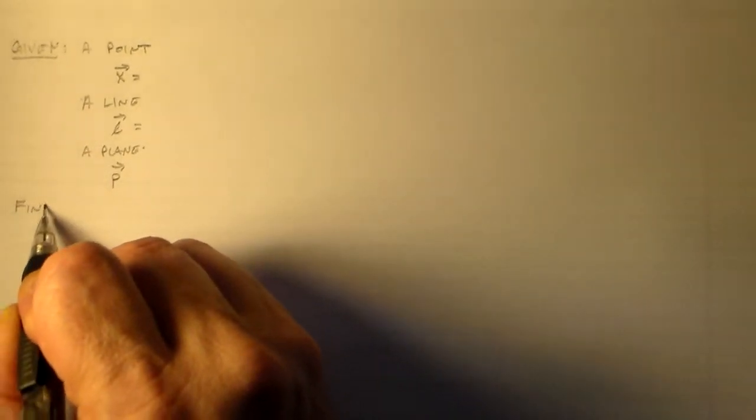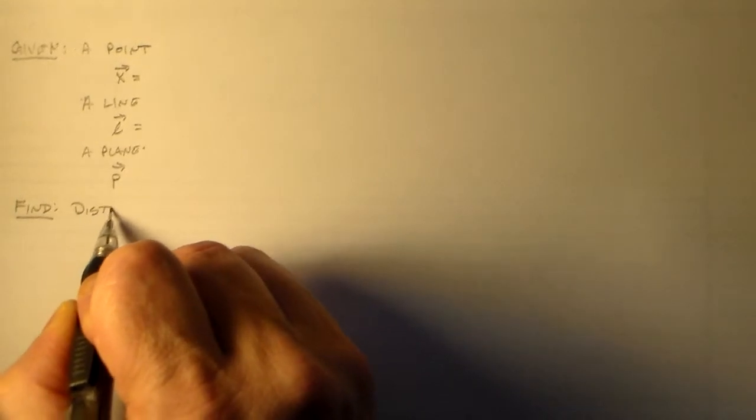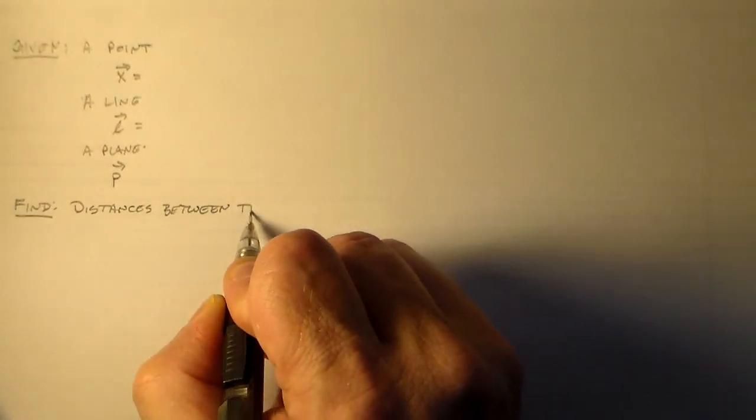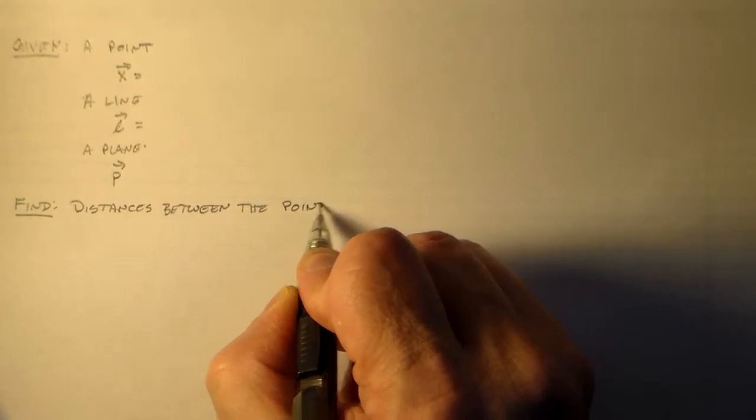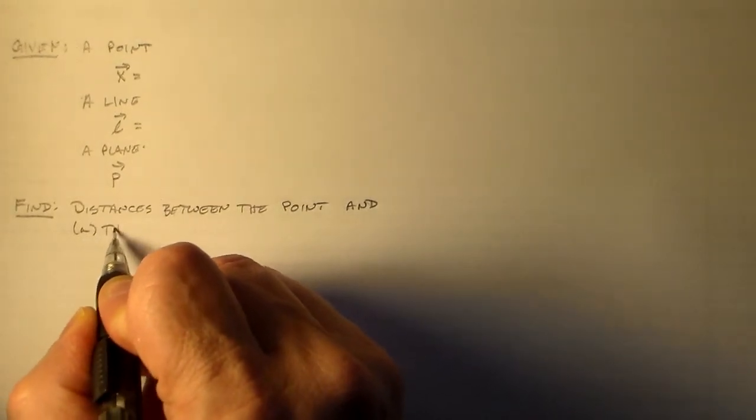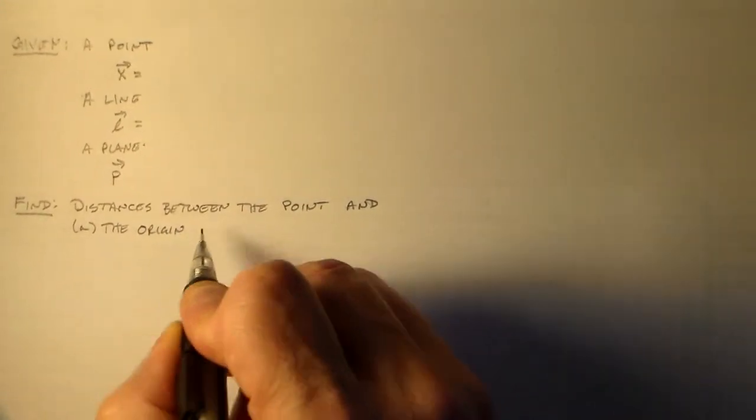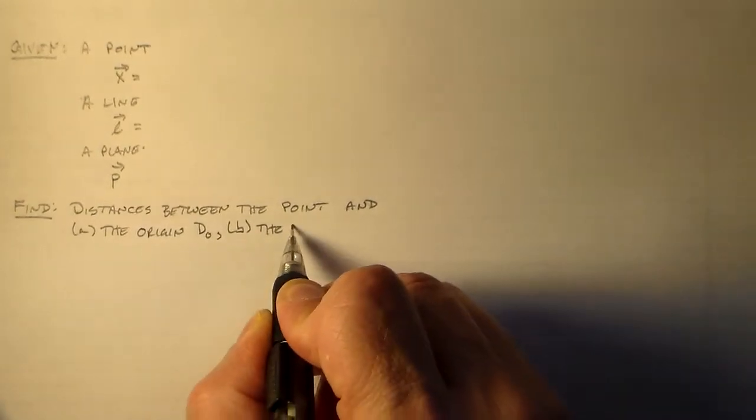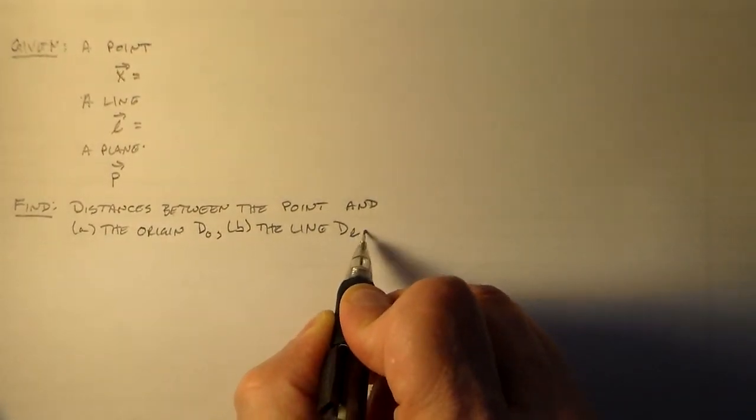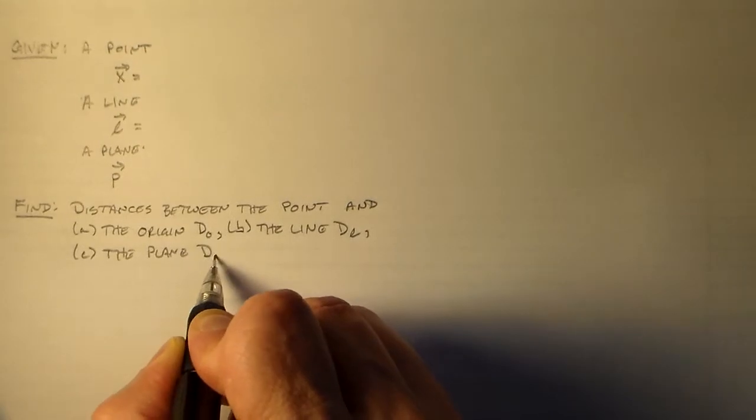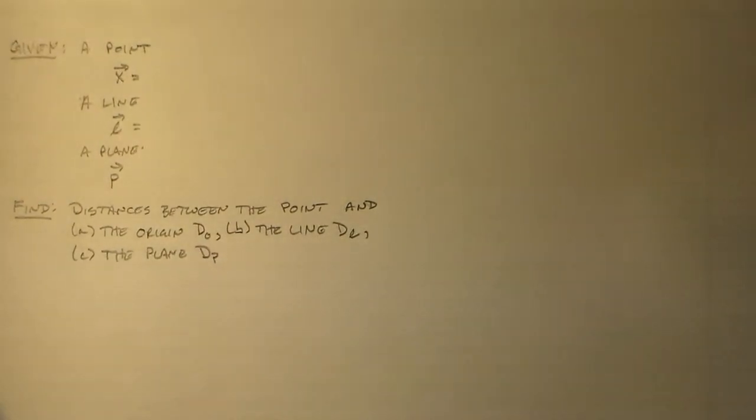And like I said, I want to find the distances between the point and what did I say I wanted? I wanted A for the origin, so I'll call that D0, B the line, and I'll call that DL, and the plane, and I'll call that DP. Does that look fair? It looks fair to me, looks nice and simple.